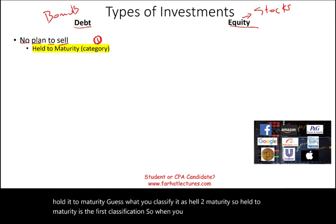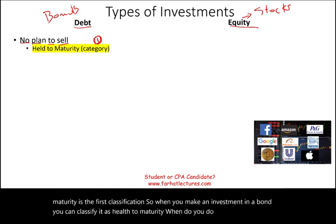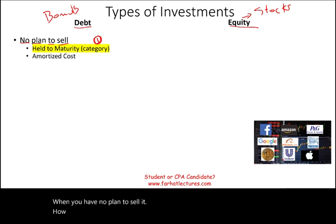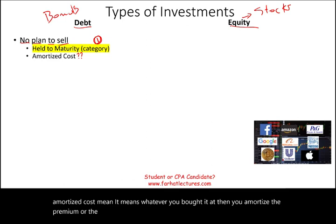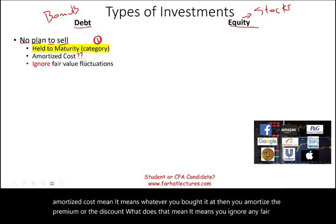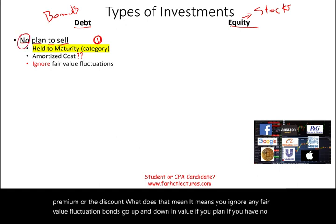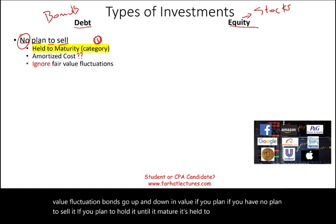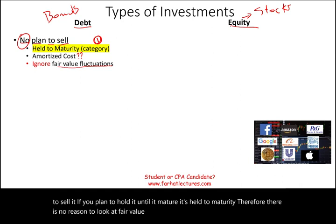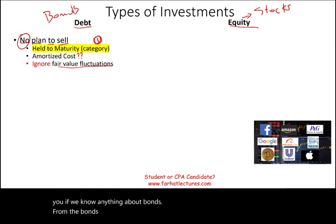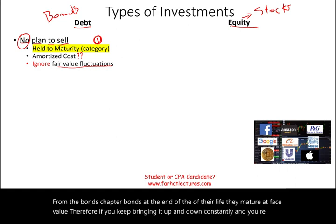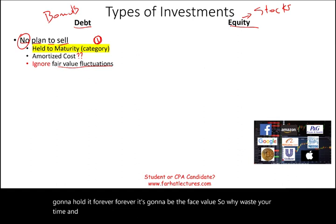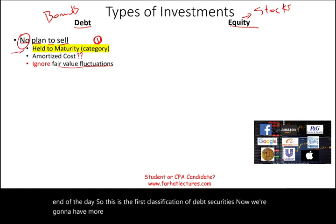When you make an investment in a bond and classify it as held to maturity, you report it at amortized cost. This means whatever you bought it at, you amortize the premium or discount and ignore any fair value fluctuation. Bonds go up and down in value, but if you have no plan to sell and plan to hold it until maturity, there's no reason to track fair value fluctuations — because bonds at the end of their life mature at face value. So why track fluctuations when you know you'll get the face value at the end? This is the first classification of debt securities, and we'll have a whole session dedicated to held to maturity.